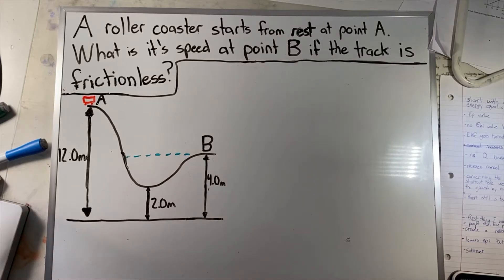Hi guys, today I'm going to show you how to solve a physics roller coaster question using the law of conservation of energy. So first off, let's read out this question: a roller coaster starts from rest at point A, what is its speed at point B if the track is frictionless?